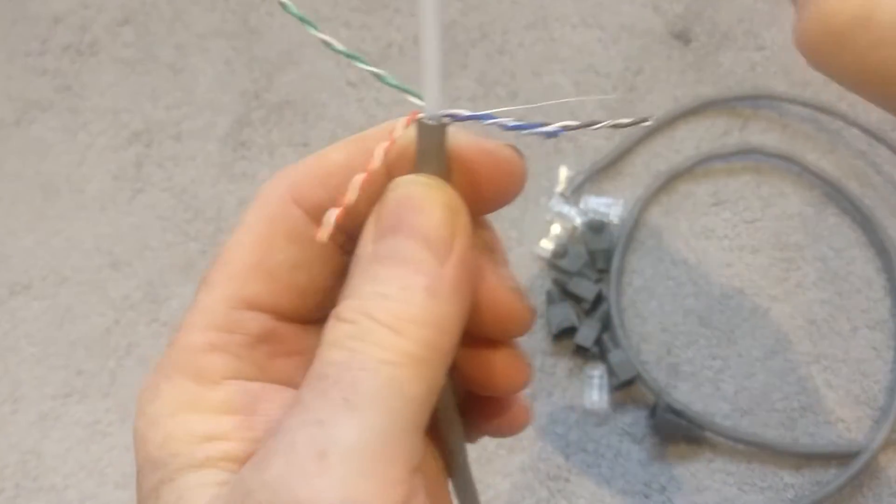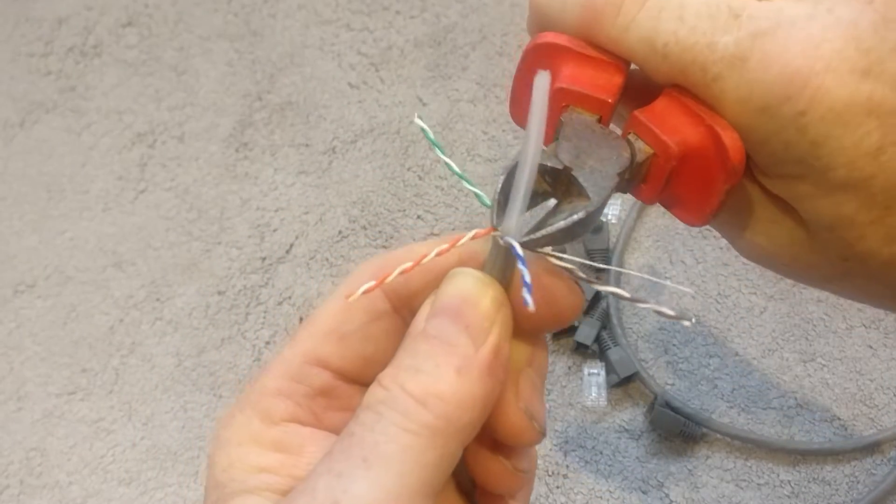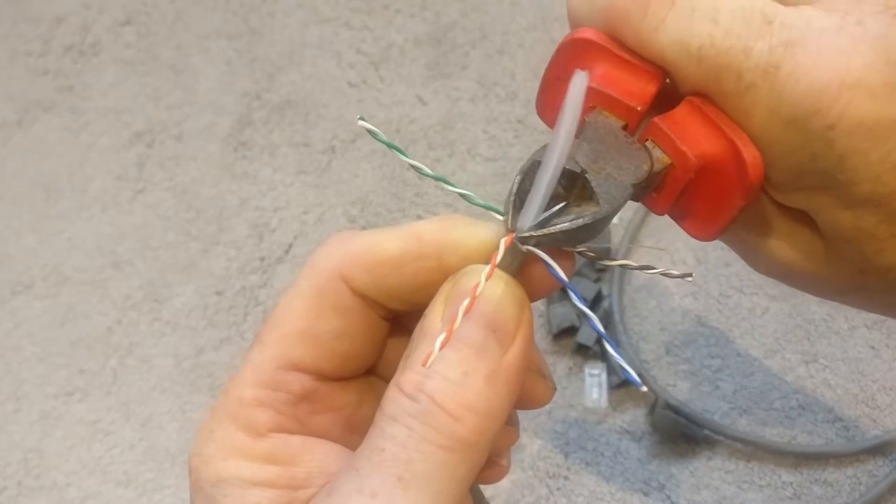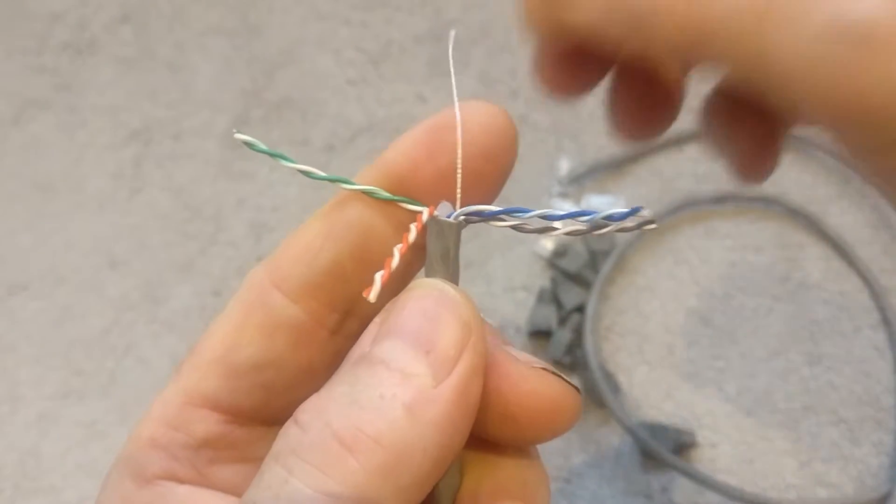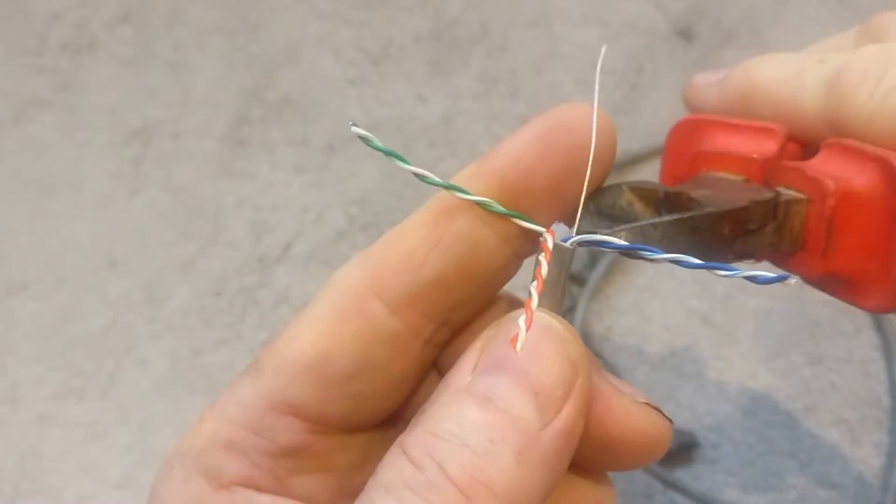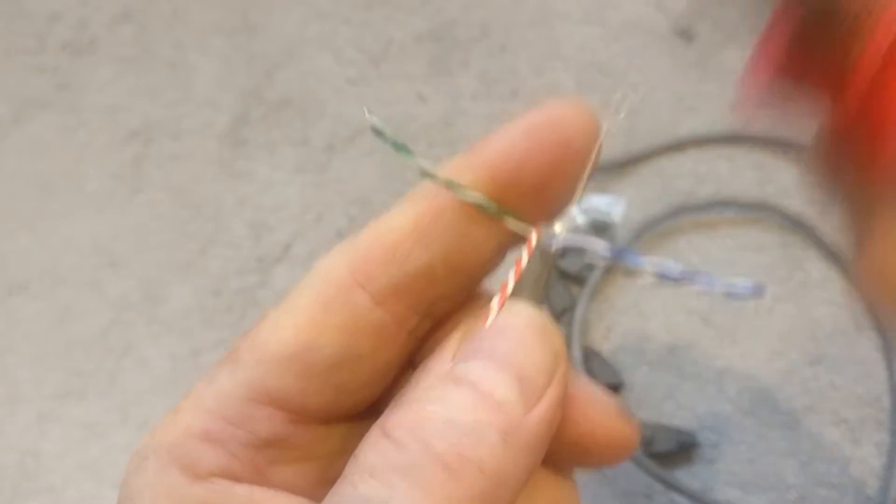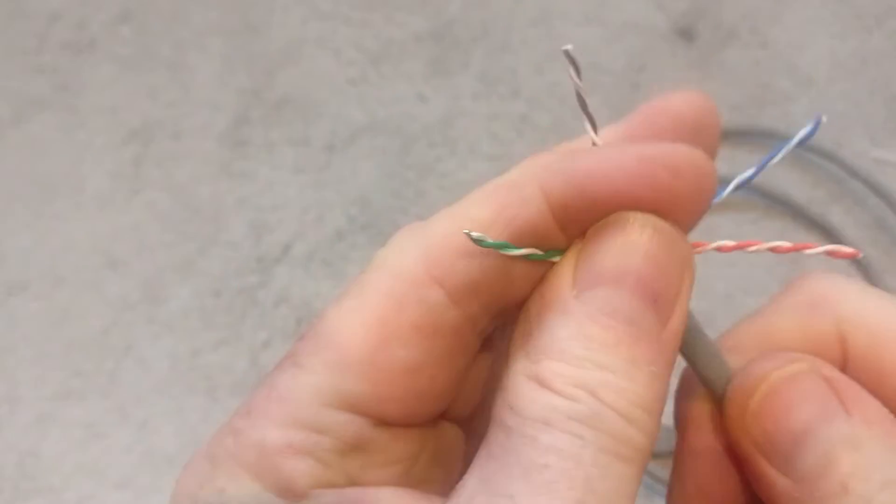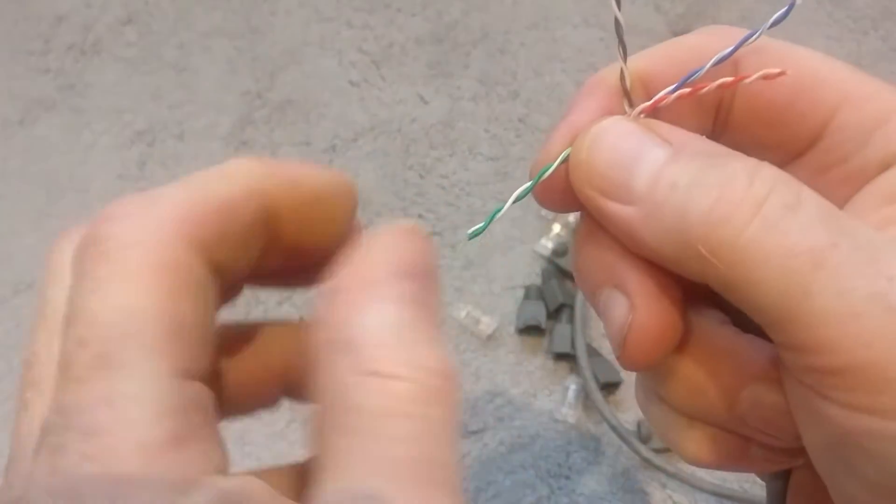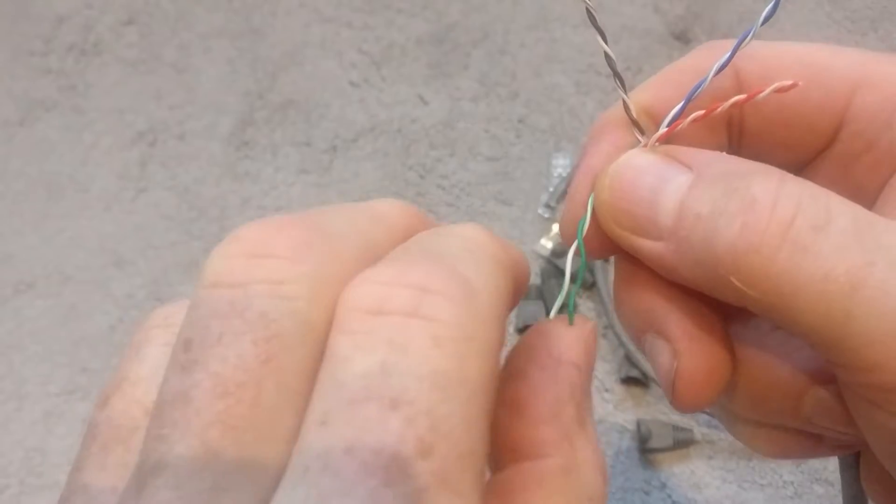Then there's also the ripcord here. We don't need that, so you can just chop that off as well. So just chop that. Once you've done that, you want to separate all of the pairs into individual strands, so just unwind them.